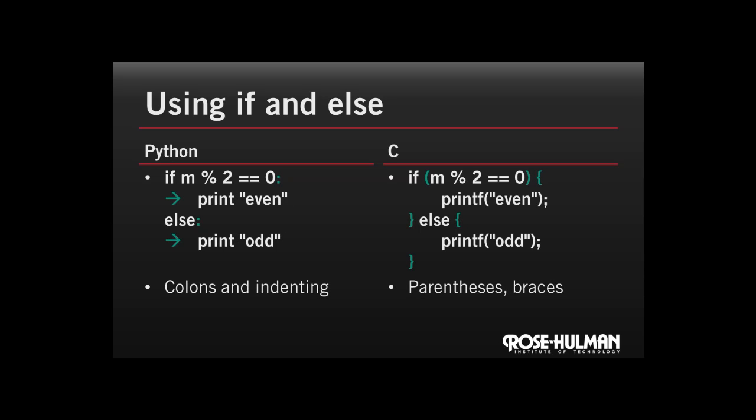The key differences here are really with how the code is grouped. In the Python code, we end the if line and the else line with a colon. And then we indent the body of what we call the then part, the print even, and the else part, the print odd. And that indentation tells Python what the grouping is. In C, there's a couple of key differences. We have to put parentheses around the condition for the if. And the other difference is we use curly braces to show the grouping.